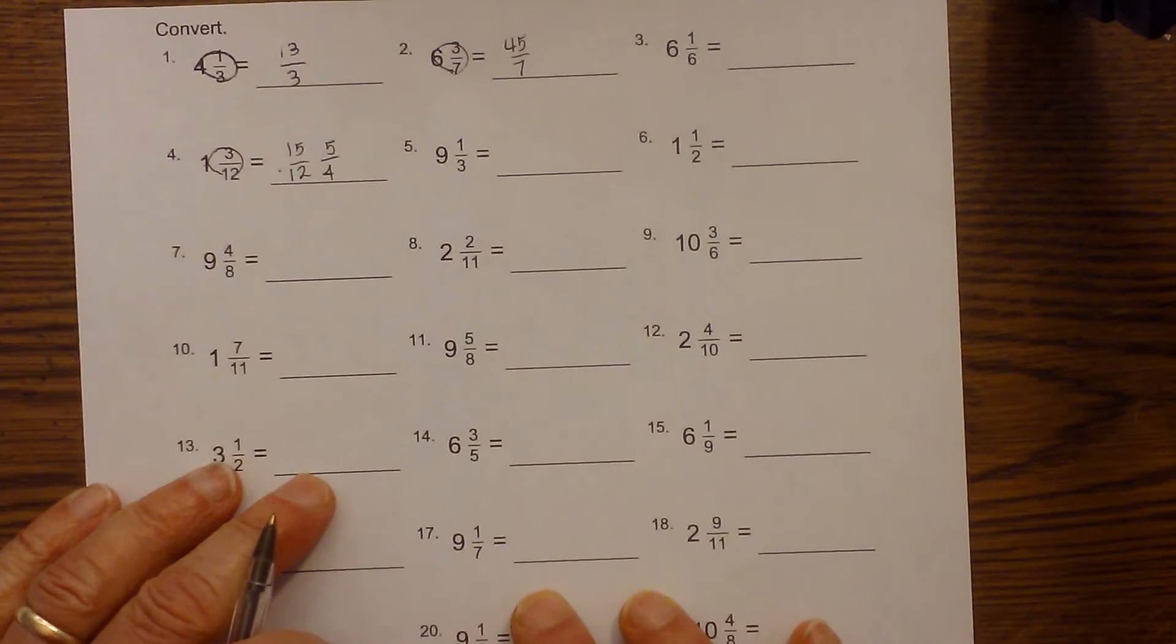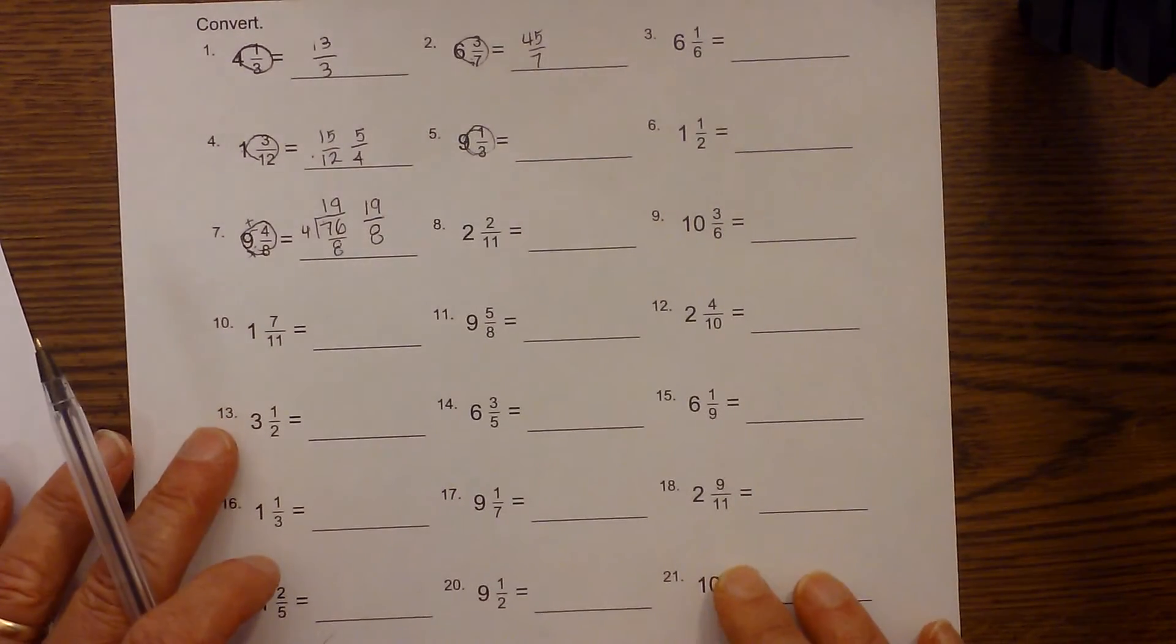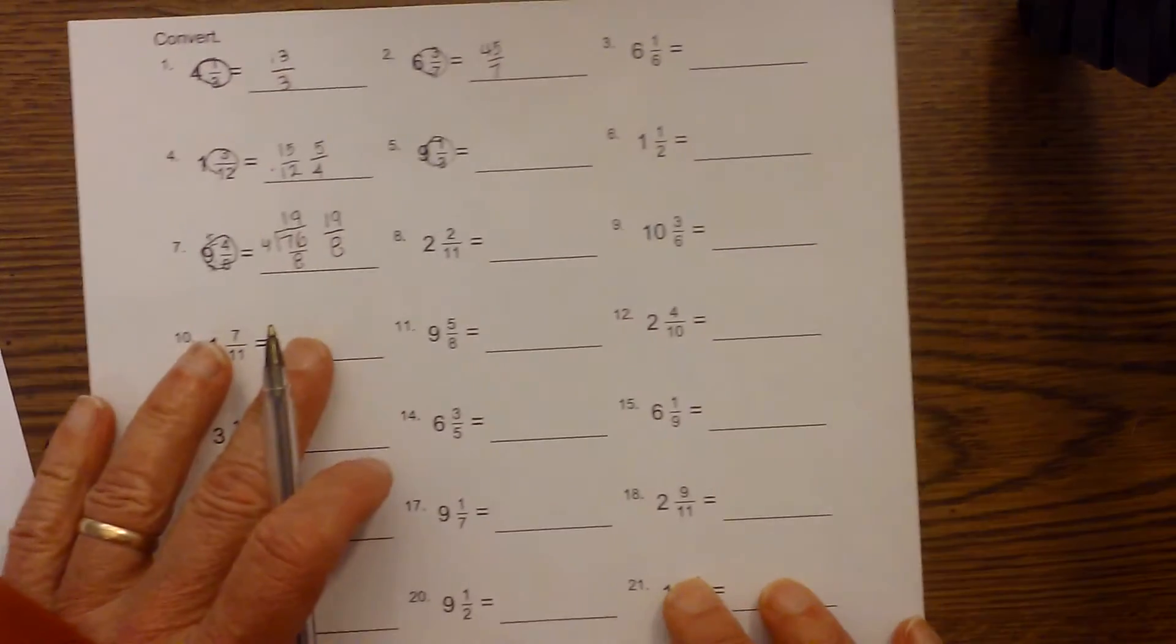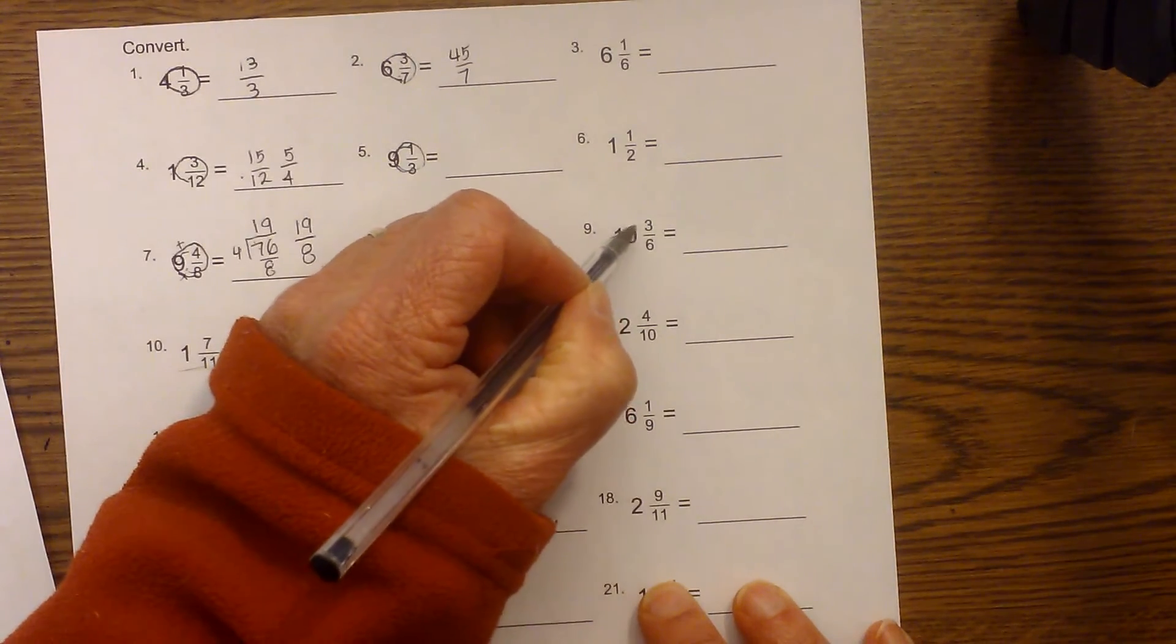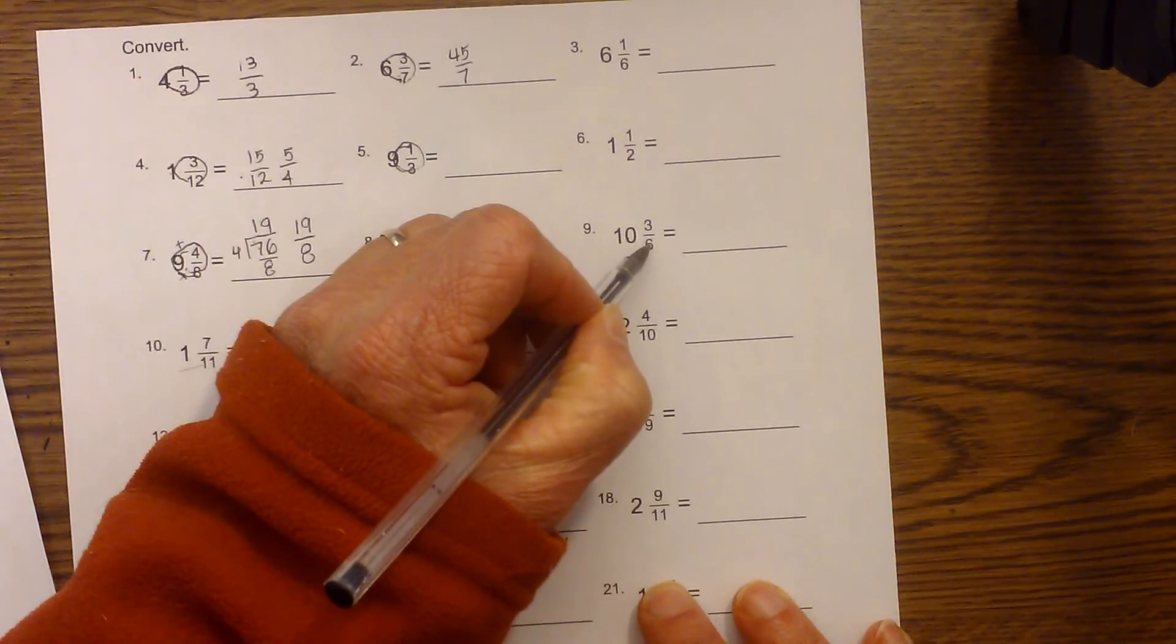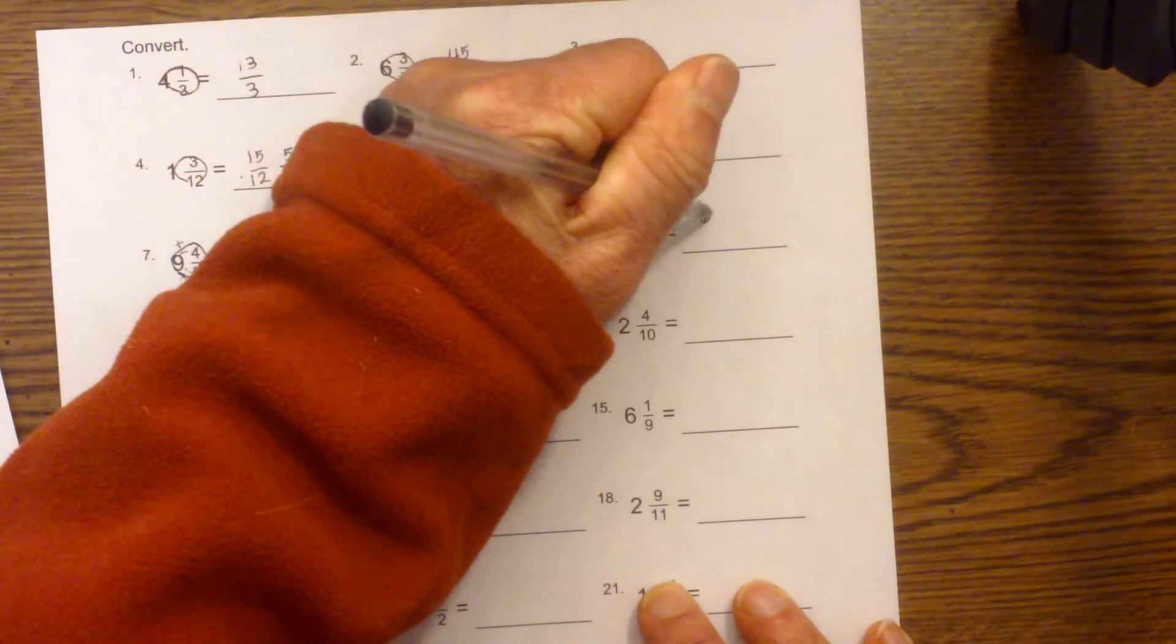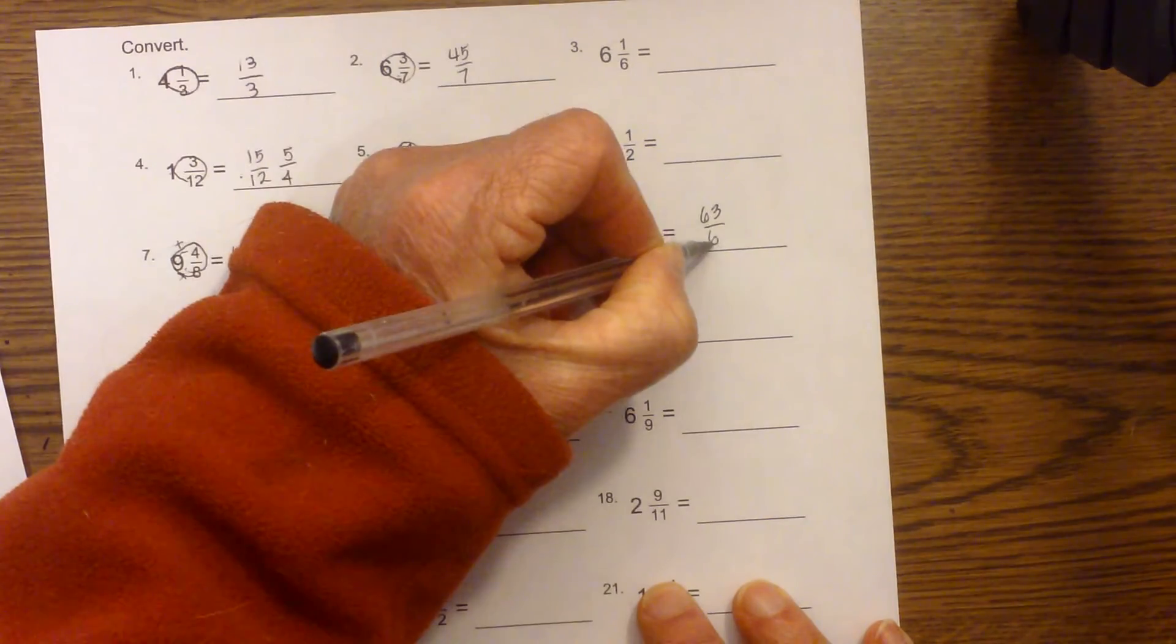Let's work one more in which we have to reduce, and I think this number 9 is an example of that. So remember the circle trick. We multiply then we add, and the 6 will go all the way around and end up in its original spot. 6 times 10 is 60. Then we add, plus 3 is 63, and the 6 goes all the way around and back at the 6.